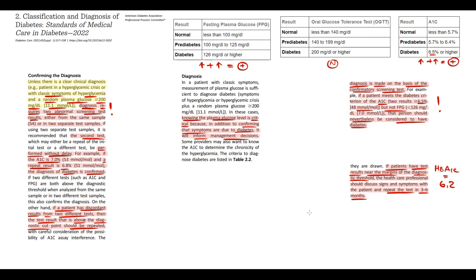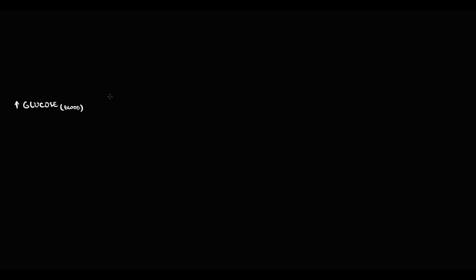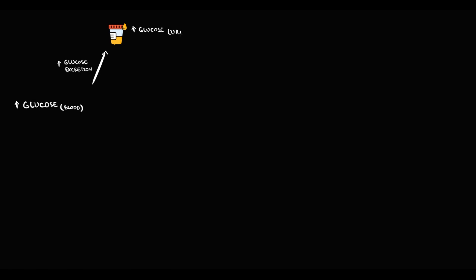The reason we care so much about blood glucose level is that continuously elevated blood glucose can cause serious clinical symptoms. The mechanism: diabetes causes elevated blood glucose, and with increasing blood glucose, glucose excretion increases — we excrete glucose in the urine, a condition called glucosuria. Glucose is an osmotically active substance, meaning it causes an increase in osmotic pressure in the urine. Because water moves by osmotic gradient, this causes increasing water excretion, known as polyuria.